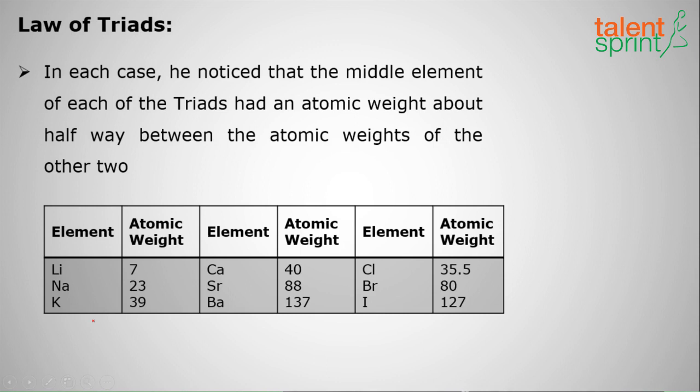The elements are lithium, sodium, and potassium - 23 is approximately equal to (39 + 7)/2. Also calcium, strontium, barium and chlorine, bromine, iodine. These are the Dobereiner triads. The middle element has the atomic weight equal to the average of the other two.